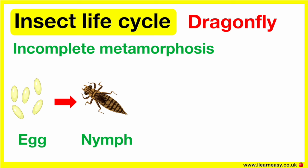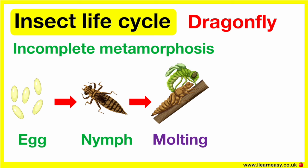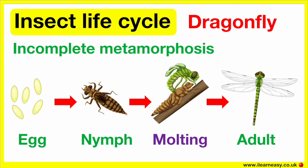In warmer climates it can take a few months, and in colder climates it can take a few years. During this stage, the nymph will molt — this is when it sheds its old skin. The adult dragonfly then emerges, and it will wait for its body and wings to harden before it can fly. Once it's able to fly, the dragonfly begins hunting for food and will mate and lay eggs to repeat this cycle.